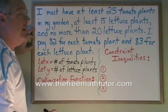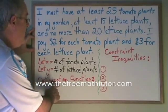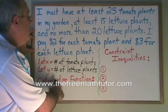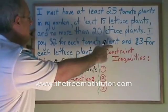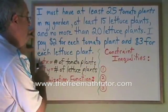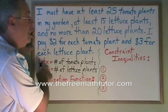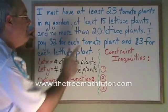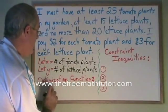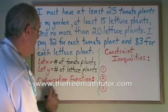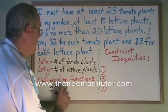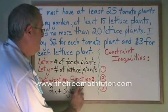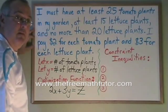Now we can go ahead and make our equations. The optimization function is the money statement. We have $2 for each tomato plant, therefore $2 for each x, and $3 for each lettuce plant, that's $3 for each y. We are going to have 2x plus 3y equals our optimization symbol.